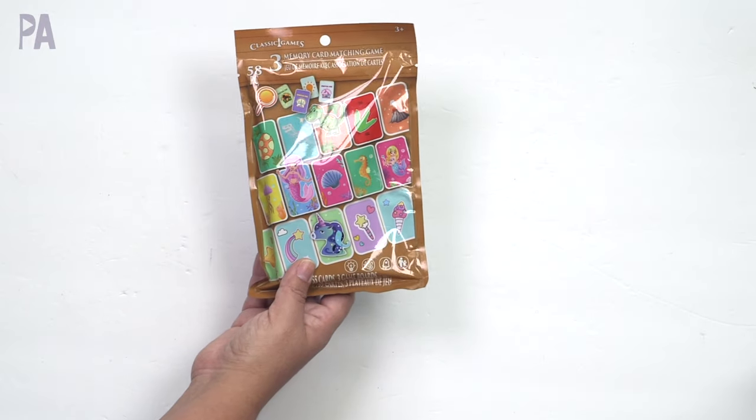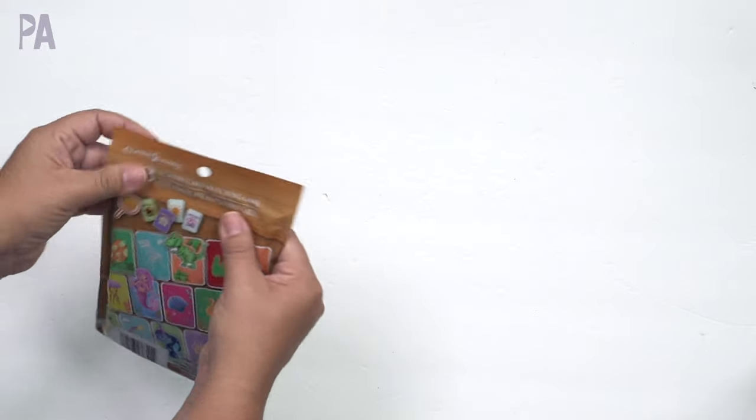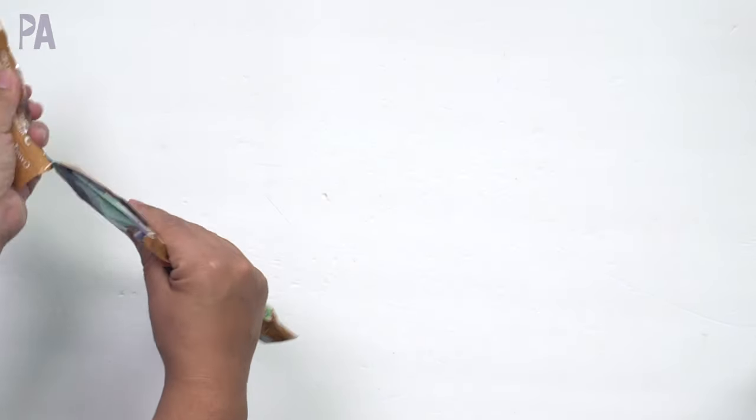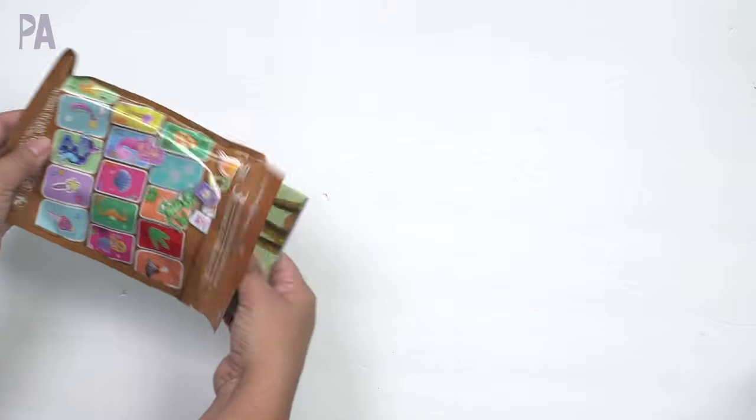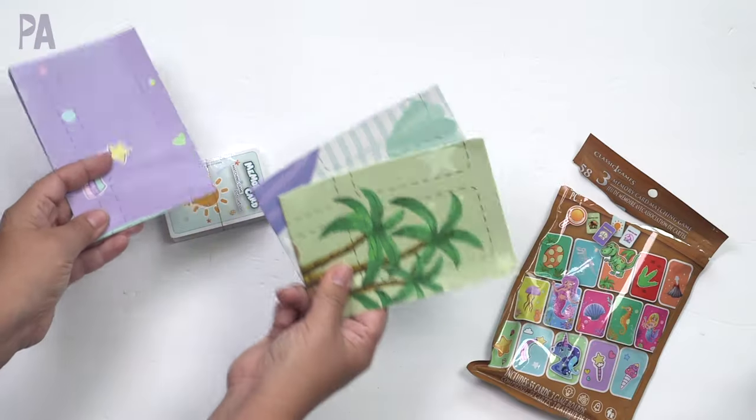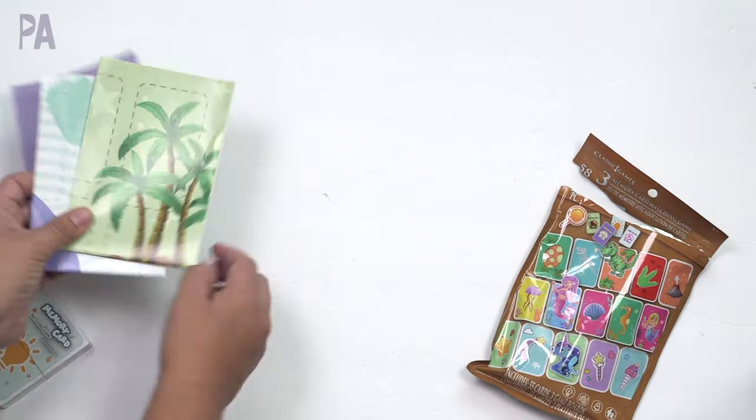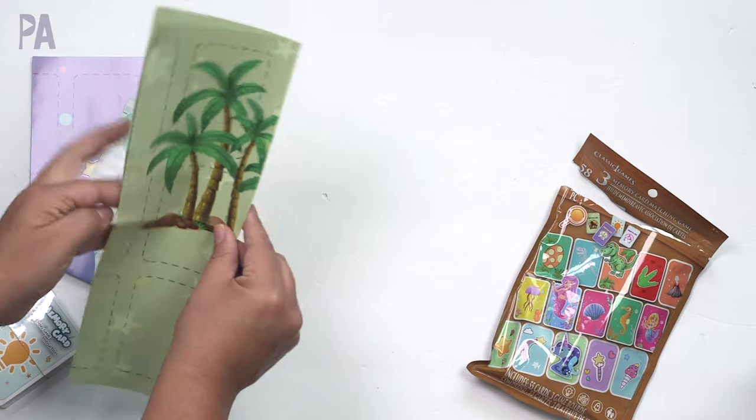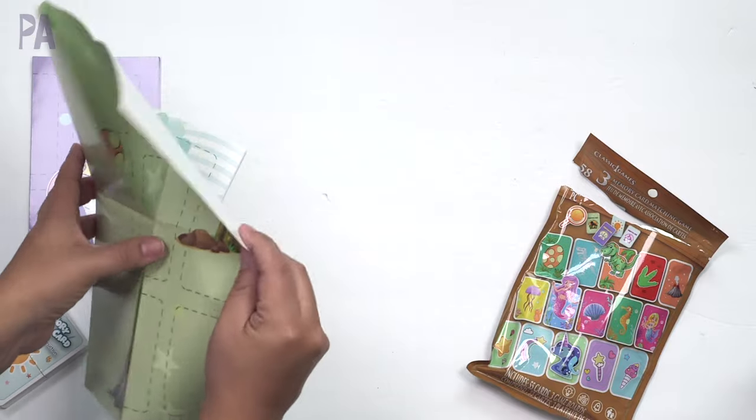Three memory card matching game. 58 pieces in here. Comes in a little bag. It's not resealable. So that's kind of a shame. They used to make them where they were resealable. Let's see what this one comes with. Three different game boards. Okay. So let's look at the game boards first. I wasn't expecting that. I was actually expecting no game boards.